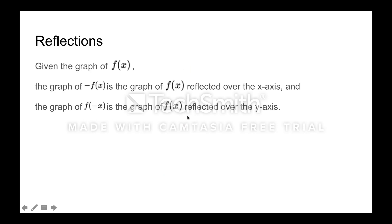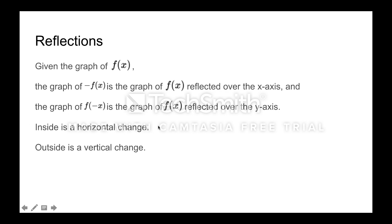Now, reflections. By multiplying either the function or the x by a negative, the graph will flip over one of our axes — it will reflect over an axis. If we know the graph of f(x), then the graph of negative f(x) is the same graph but flipped vertically. That negative is outside, so we get reflected over the x-axis. If the negative is inside multiplying the x, anything that changes x is a horizontal change, so the graph gets reflected horizontally — it flips over the y-axis. Inside is always a horizontal change; outside is always a vertical change, for both reflections and translations.